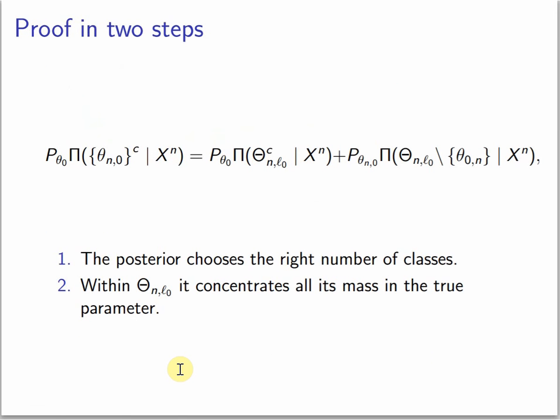The proof consists of two steps. First you prove that the posterior chooses the right number of classes, and then within the parameter space theta L0, it concentrates all its mass in the true parameter.